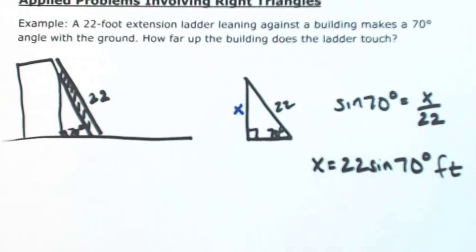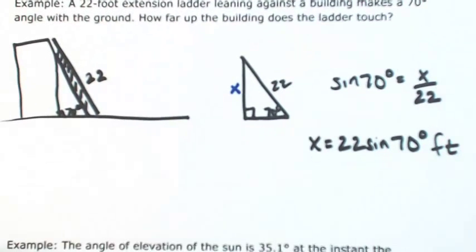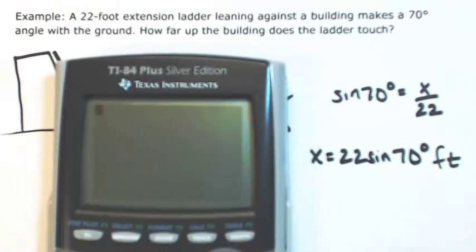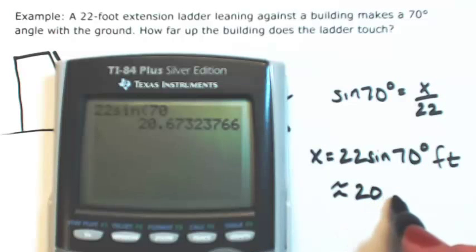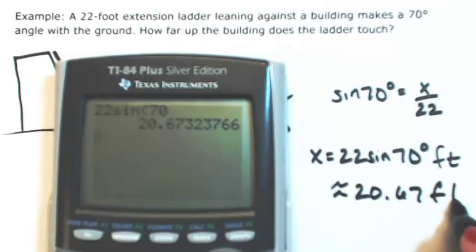This would be considered the exact answer. But if you do want to get an approximation, just plug that into the calculator. 70 degrees, so make sure your mode is in degrees. So 22 sine 70. So this is about 20.67 feet.